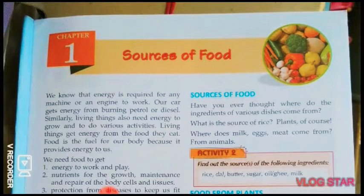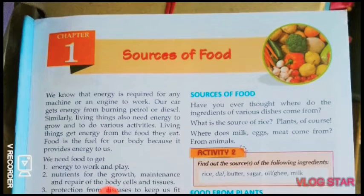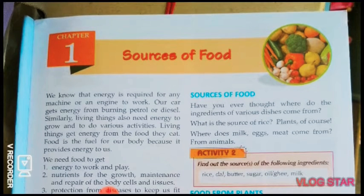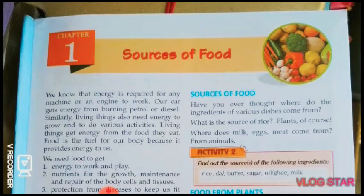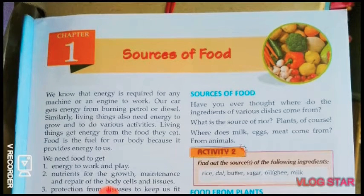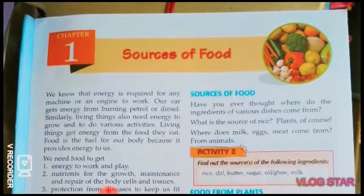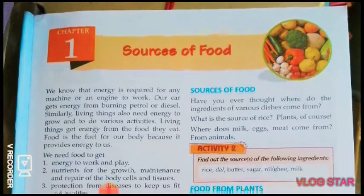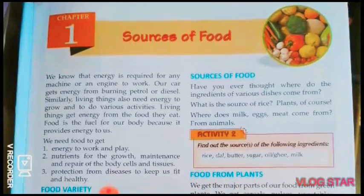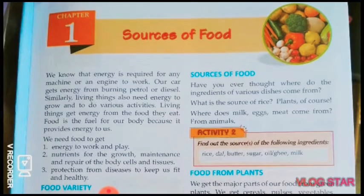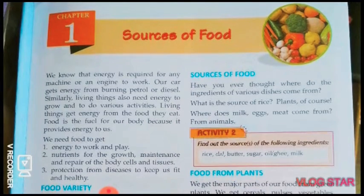Hello my dear students, I hope you all are taking good care of yourselves. Today I am going to teach you a new chapter from your science book — the first chapter: Sources of Food. In this chapter we will learn food varieties, sources of food like plant sources and animal sources, and different food habits of different animals. We know that energy is required for any machine or engine to work. Our car gets energy from burning petrol or diesel. Similarly, living things also need energy to grow and to do various activities. Living things get energy from the food that they eat. Food is the fuel for our body because it provides energy to us.